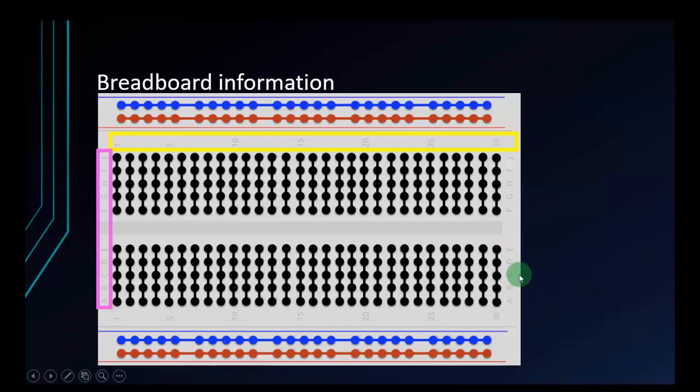And the pink box shows the letters from A to J. There are rows A, B, C, D, E, F, G, H, I, and J.